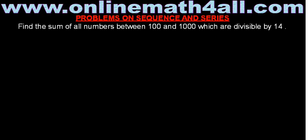To solve this problem, what we have to do is first we have to find the numbers between 100 and 1000 which are divisible by 14. And then we have to add all those numbers, and we will get the sum. I will show you how to solve this one. My first aim is to get all the numbers between 100 and 1000 which are divisible by 14.